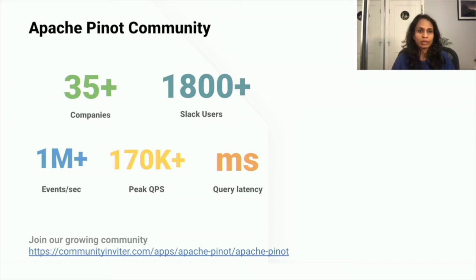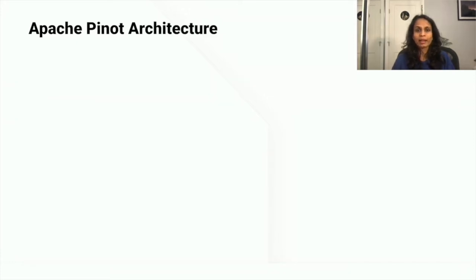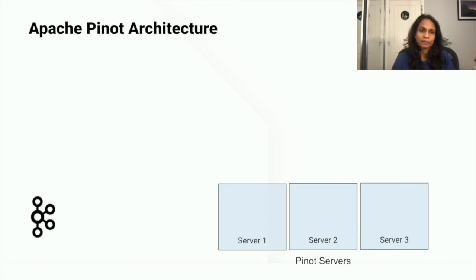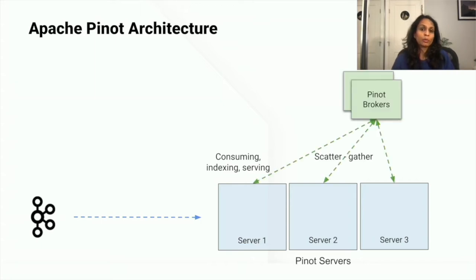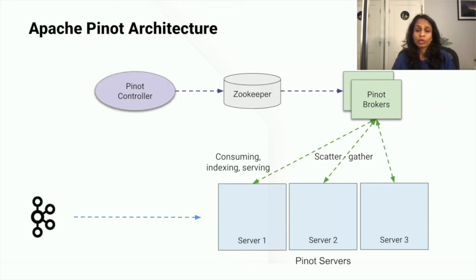How is Pinot working under the hood? Let's look at a high-level overview of Pinot's architecture. Assume we have a Kafka stream from which we want to ingest event data. The first component is the Pinot servers, which directly consume from the stream, indexing data as it is consumed, and also serve queries on the indexed data. Next are the Pinot brokers, which take in queries from clients, forward them to servers, merge the results, and send them back to clients. Finally, the controller manages all other components with Helix for cluster management and Zookeeper as a metadata store.